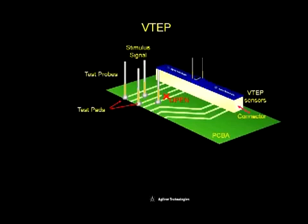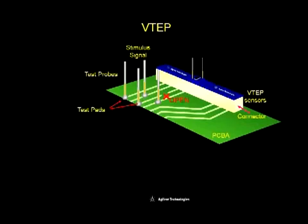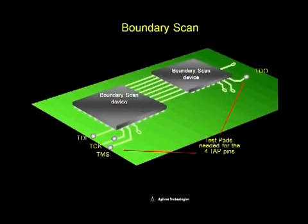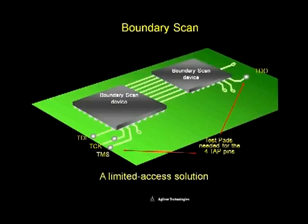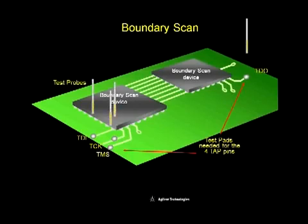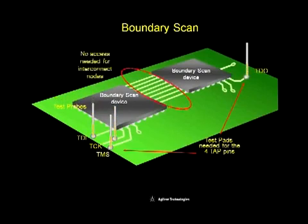Hence, the open defect can be detected. Boundary Scan Technology is based on IEEE standard. It is a limited access solution. With test access to 4 TAP pins — TCK, TMS, TDI, and TDO — one can control the boundary scan devices in the entire chain.